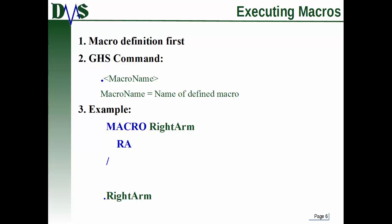Here's an example. We've started by defining a macro called 'right arm'. Here's my GHS command in the middle — that could be anything. And then later in my run file, I just type '.right arm'. And that's how that works.